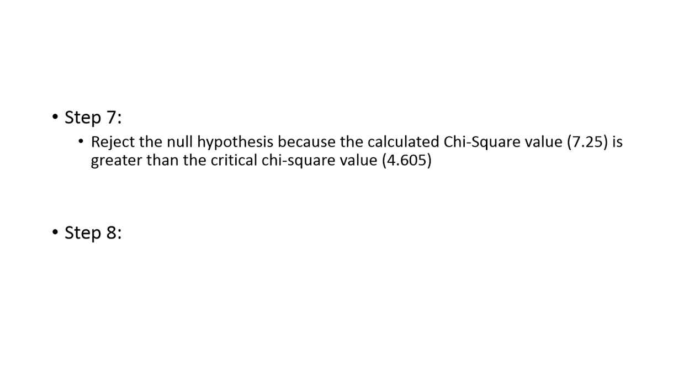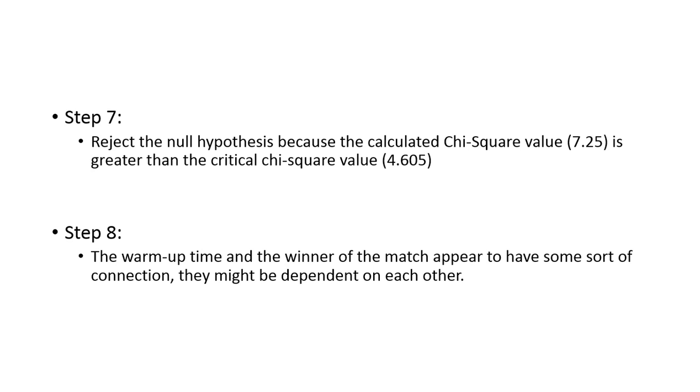So, going on to step seven, would we reject or fail to reject our previous statement? We would end up rejecting it because it is larger than 4.605. So we'd end up rejecting our null hypothesis. Now, if we reject our null hypothesis, what does that mean in our statement? Is it independent or is it dependent on each other? So based on this, we probably would say that, yes, it is more likely that they are dependent on each other because that chi-squared is higher. So that means that warming up and who wins, the more they warm up, one person is more favored to win than the other. So that's our step eight.